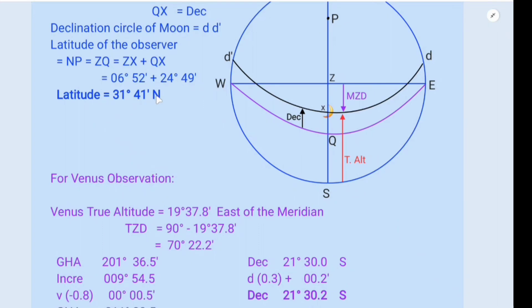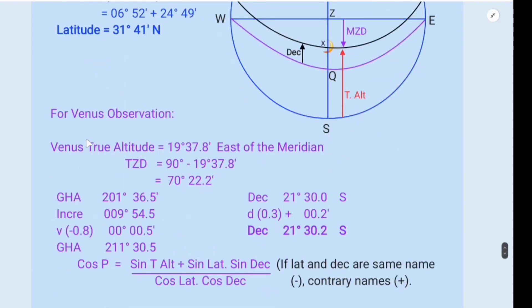We will use this latitude in the observation of Venus. Venus true altitude is given as 19 degrees 37.8 minutes, which is east of the meridian. TZD is equal to 90 degrees minus true altitude. So we get TZD as 70 degrees 22.2 minutes.